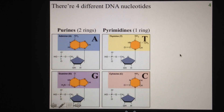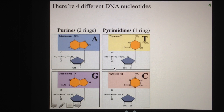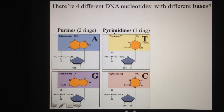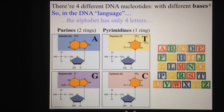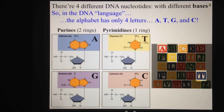There are four different DNA nucleotides that have the same structure when it comes to the phosphate and the deoxyribose sugar — it's exactly the same for all four. The only difference between them are the bases. You have two purines, which are adenine and guanine, and two pyrimidines, which are thymine and cytosine. We abbreviate those as A, G, T, and C. So in the DNA language, this alphabet only has four different letters: A, T, G, and C.